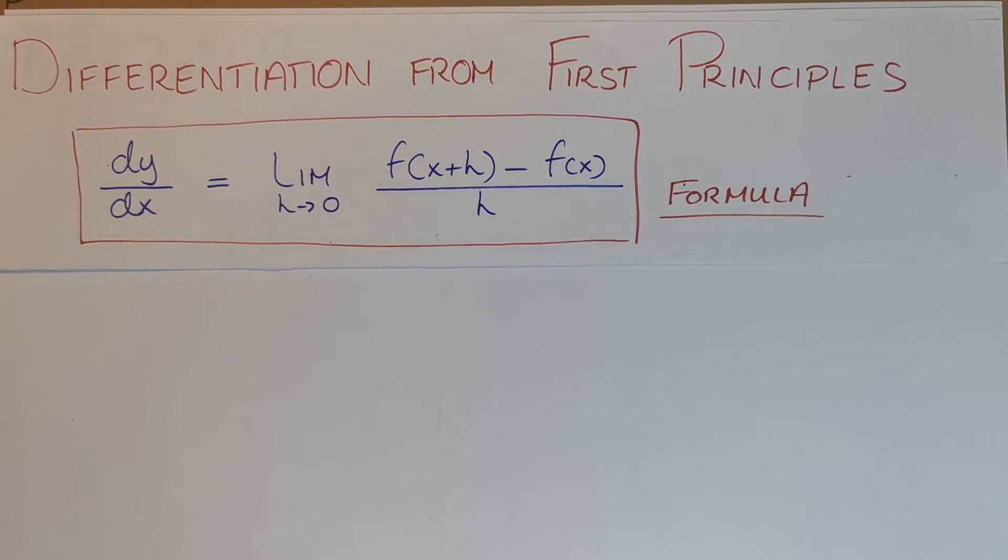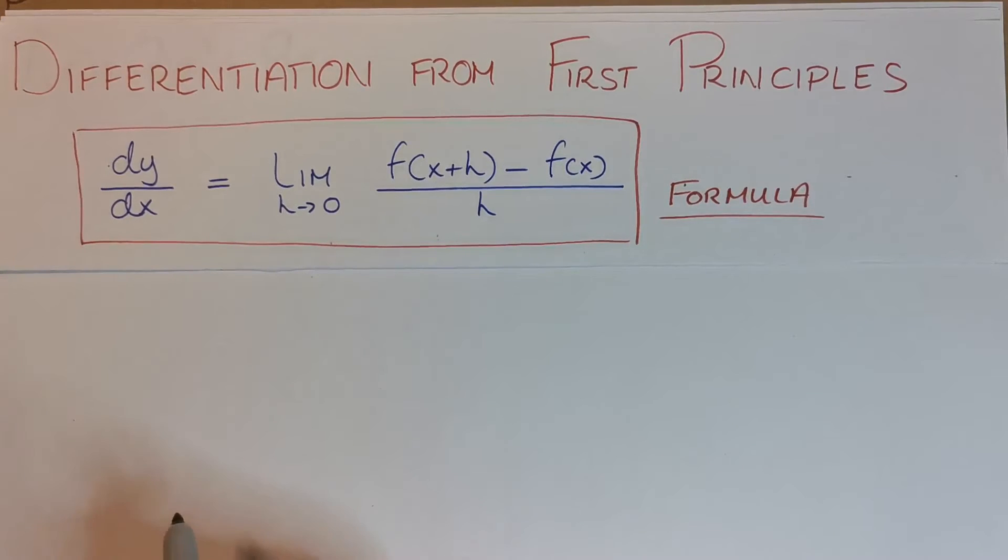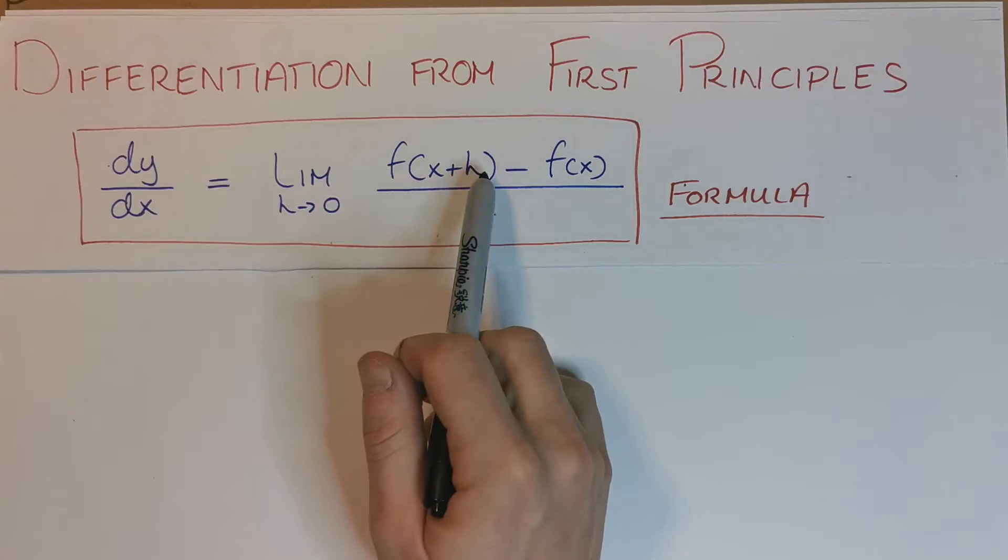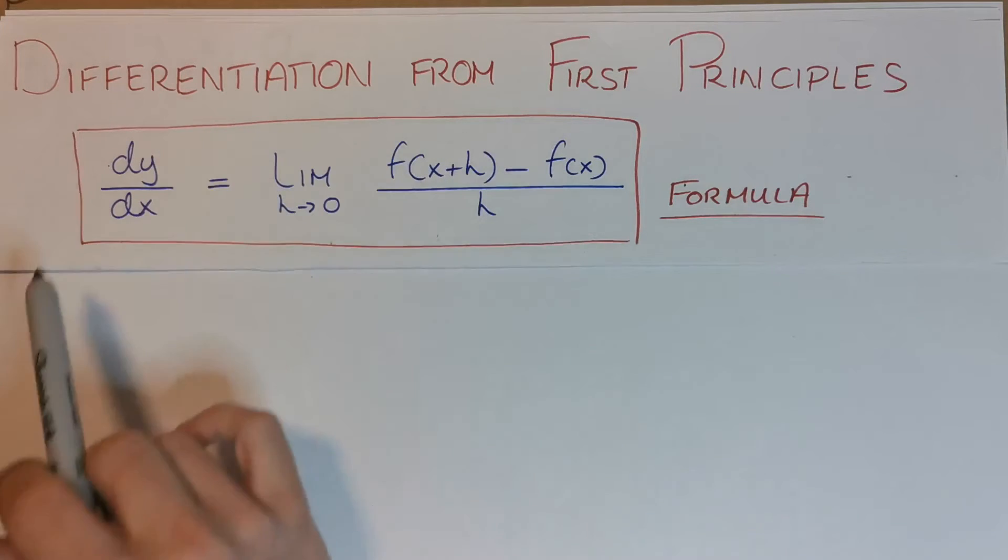We have this differentiation from first principles where we have this limit, and it can look pretty scary at first, but it's actually pretty easy to work with. It just requires good algebra skills. So it says that the derivative dy/dx is equal to the limit as h goes to zero of f(x+h) minus f(x) all over h. This is the formula we need to know.